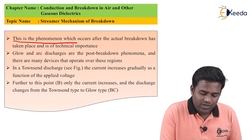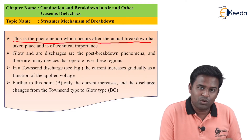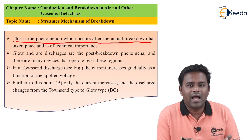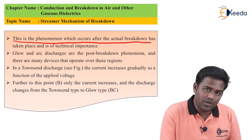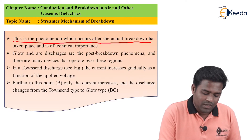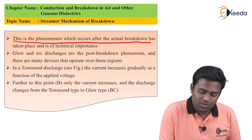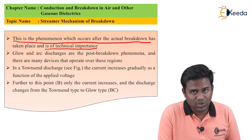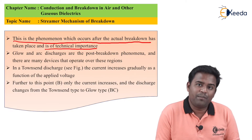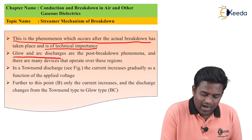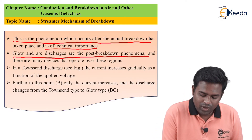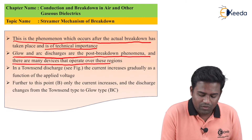This is the phenomenon which occurs after the actual breakdown — that is, post-breakdown — meaning when two molecules collide with each other and breakdown happens. Post-breakdown phenomenon means the phenomenon after actual breakdown has taken place, and it is of technical importance. It happens in two ways: glow discharge and arc discharge. Glow and arc discharges are the post-breakdown phenomena, and there are many devices that operate over these regions.